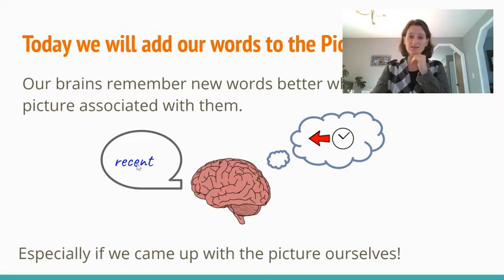So here you can see I chose the word recent to use as a demonstration and for recent I want to remember that it has to do with time and I've got an arrow pointing backwards because it's a time that's just kind of happened. Recent is something that's happened not very long ago.